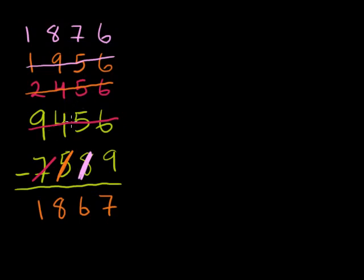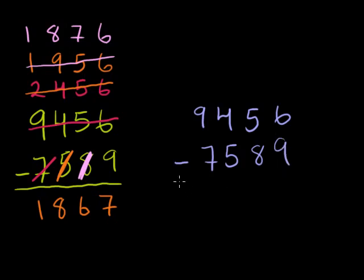Now, just to make sure that we got the right answer, maybe to compare and contrast a little bit, let's do it the traditional way. 9,456 minus 7,589. So the standard way of doing it, I like to do all my borrowing before I do any of my subtractions so that I can stay in my borrowing mode, or you can think of it as regrouping. So I look at all of my numbers on top and see, are they all larger than the numbers on the bottom? And I start here at the right.